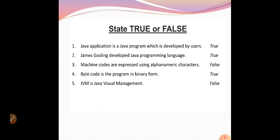Machine codes are expressed using alphanumeric characters — this is false. It is not alphanumeric; it should be machine code language, that is binary codes, or we can say byte codes. Byte code is the program in binary form — yes, it is true. JVM is Java Visual Management — this is also false. JVM stands for Java Virtual Machine.